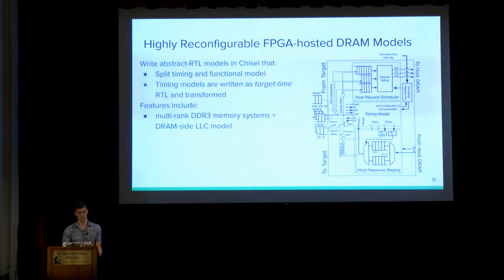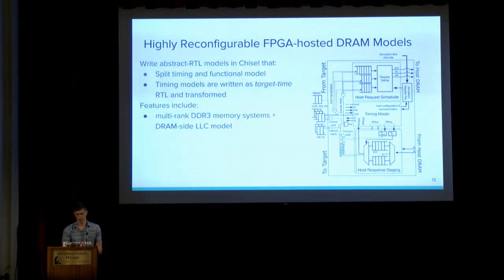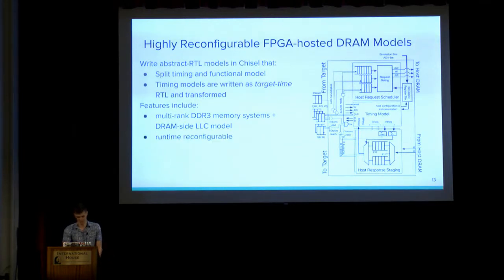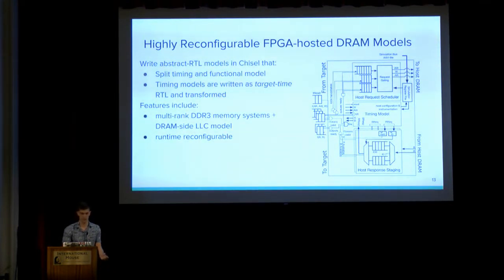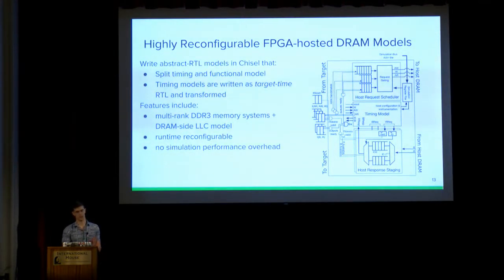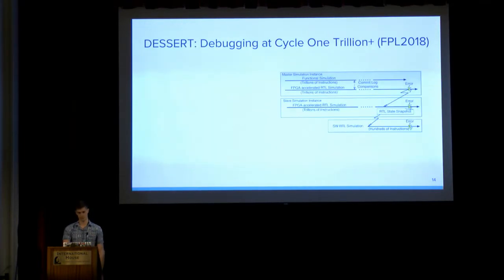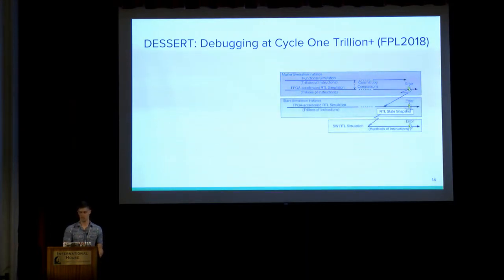This allowed us to write very detailed memory models of multi-rank DDR3 memory systems comparable to DRAMSim2. We also provide a last-level cache model that lets you model last-level caches far too large to fit in FPGA fabric — we've implemented one-gigabyte caches. These are highly reconfigurable, exposing upwards of 40 different programmable registers allowing you to explore a wide design space without recompiling the simulator, and there is no simulation performance overhead if the target subsystem you're modeling is slower than the host.